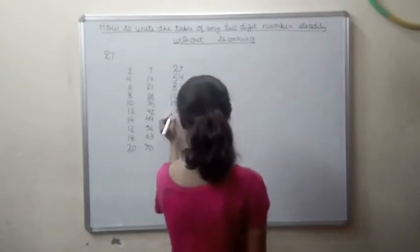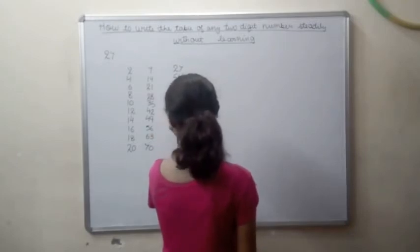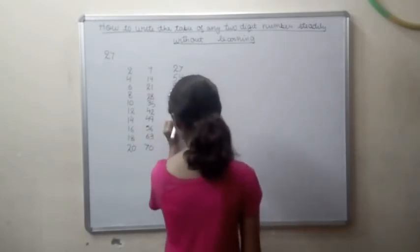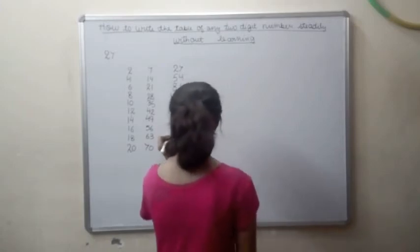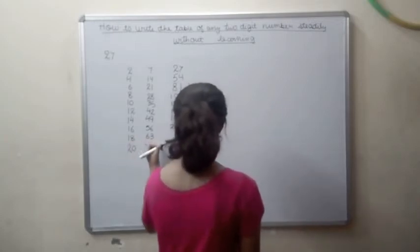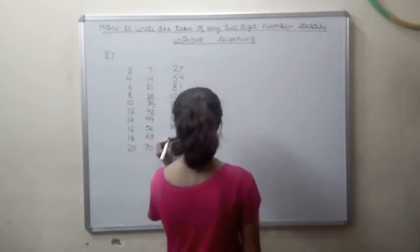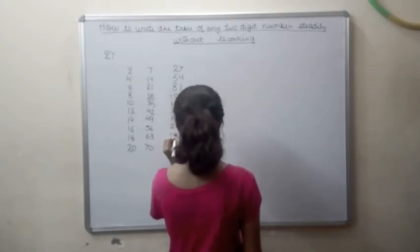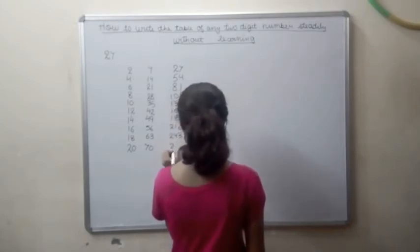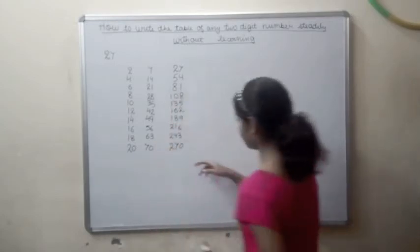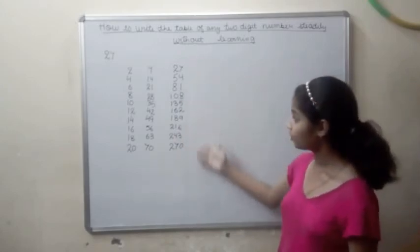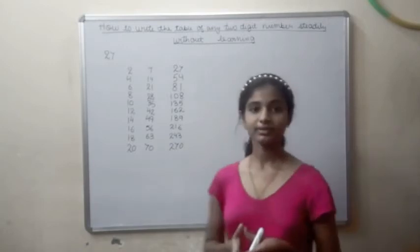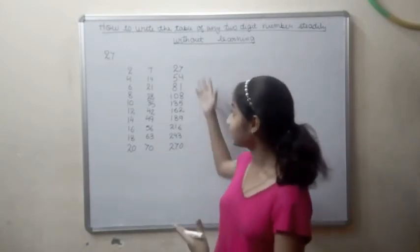So 12 plus 4 and we will write here 16, 2, 18, 9, 21, 6 and here also we will write this. 18 plus 6 we will do and here we will write 24 and 3 and here write 270. So 27. Now we have got the table of 27. So you can see, so now you can do it like this.